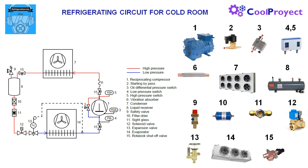In number 8 we have the liquid receiver. Its function is to store liquid as a hydraulic inertia tank to ensure the expansion valve is always fed with liquid refrigerant and to prevent flash gas. This receiver is equipped with a safety valve — number 9 — to release pressure from the receiver in case of emergency.